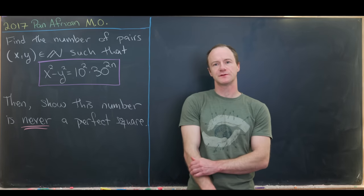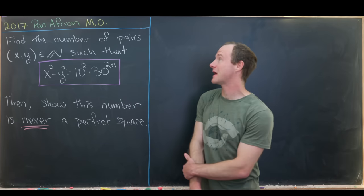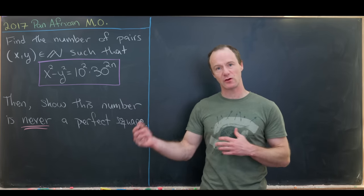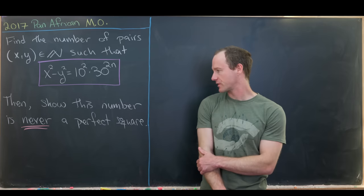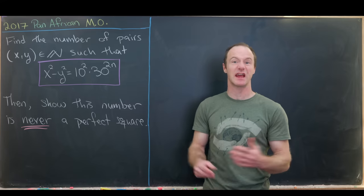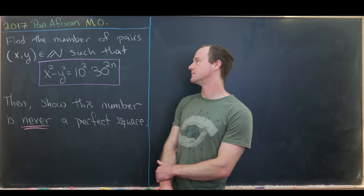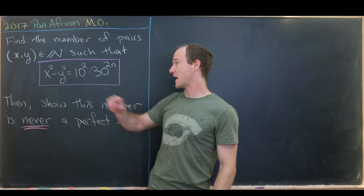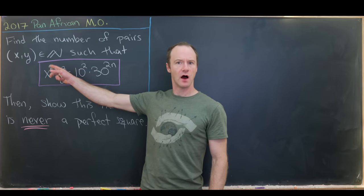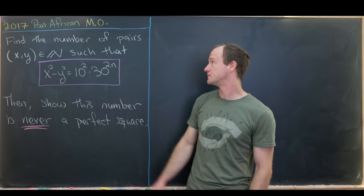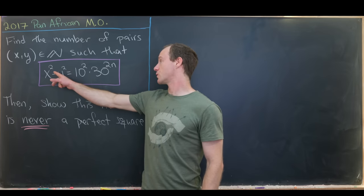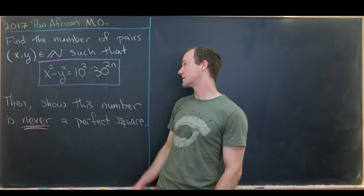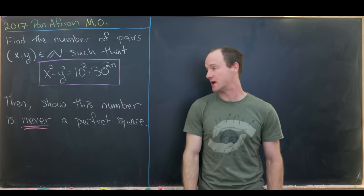Today's problem is from the 2017 Pan-African Math Olympiad. It's a combination of counting and number theory, with a lot of nice characteristics built in. Our goal is to find the number of ordered pairs (x, y) of positive integers such that x squared minus y squared equals 10 squared times 30 to the power 2n.